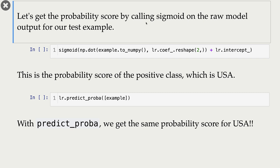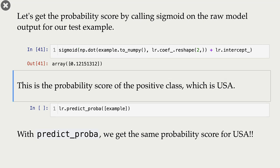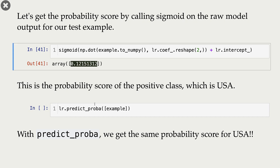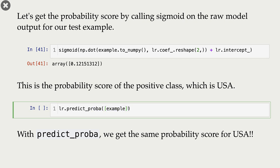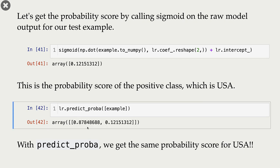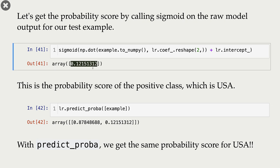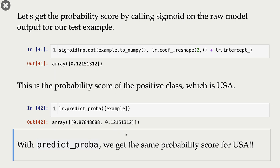Let's calculate the probability score by calling sigmoid on the raw model output for our test example. This is our probability score, and it corresponds to the positive class — in our case, the USA class. Now when we call predict_proba on our example, these are the probabilities we get: the first corresponds to Canada and the second corresponds to USA. The probability we calculated for the USA class matches, so we now know exactly how predict_proba is calculating probabilities.